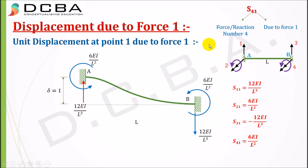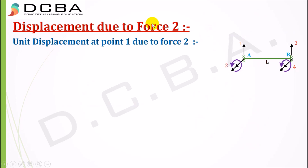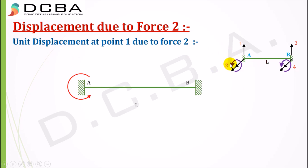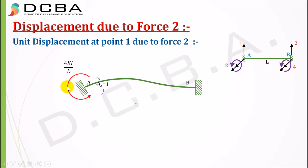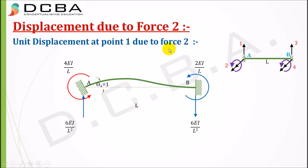Now we move to displacement due to force two. Force two is an anti-clockwise moment at point one, so we give a unit rotation — theta_A equal to one. The moment required to produce this unit rotation is 4EI/L. The reaction formed at the far end is 2EI/L of anti-clockwise nature, and upward reactions of 6EI/L² are formed at both points A and B.